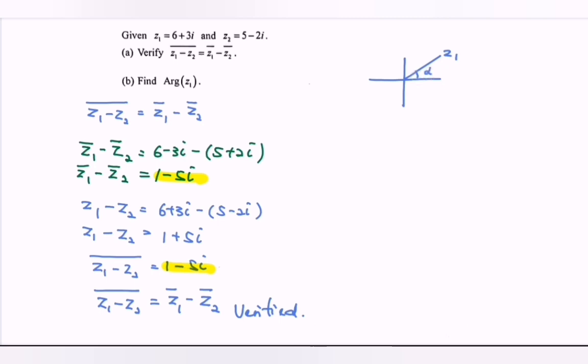Here we have the angle alpha, the basic angle. Tangent alpha equals 3 over 6, where tangent alpha equals 1 over 2. By referring to the calculator, alpha equals 26.57 degrees.